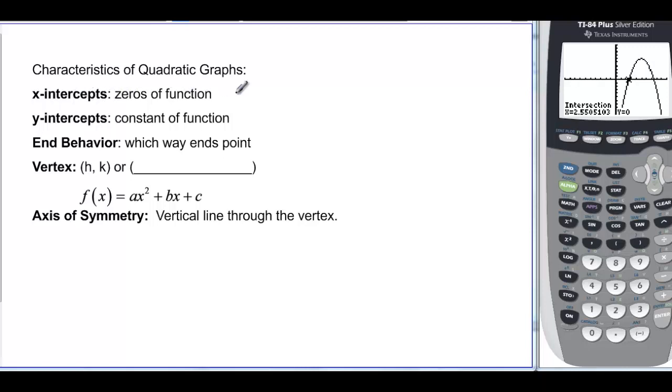So we know that we have x-intercepts and they're the zeros of the functions. Sometimes these are nice to find and sometimes they're not. If it's factorable, then it's nice. If it's not factorable, then sometimes you get decimals and it's too hard to just look at the equation to find the x-intercepts. The y-intercept is always the constant of the function, so that's just c. The end behavior talks about which way it opens up or opens down. And this is a quadratic, so both ends will go the same because it's a degree 2.